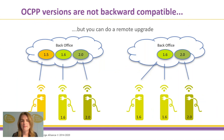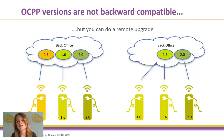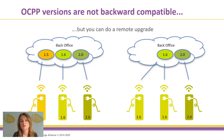OCPP versions are not backwards compatible, so if you have charging stations on 1.5, 1.6, and 2.0, your back office has to have all these different versions implemented. You can do a remote upgrade — some companies do this. If the vendor supports 1.6 on that hardware and if the platform supports it, you can upgrade your charging stations and reduce the number of protocols your system is supporting. Whether this is possible depends on the hardware vendor and whether the platform itself is capable of running a bigger version of the spec.